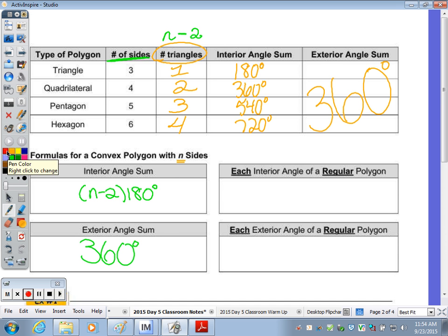On the right side, if you want to find each, that means just one angle of a regular polygon, meaning all sides and all angles are the same, they have the same measures, so I take this n minus 2 times 180 and I divide by the number of sides. However, if you already know this, as we talked about with the triangle, do you need to do the substitution?